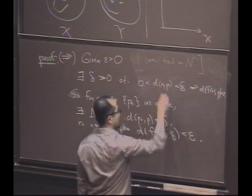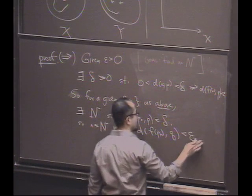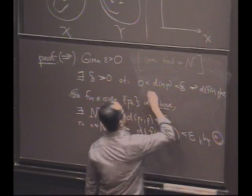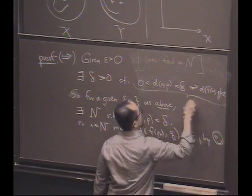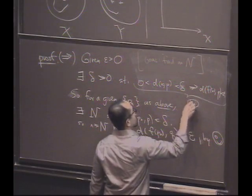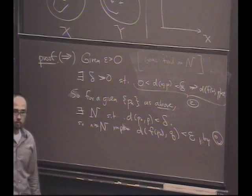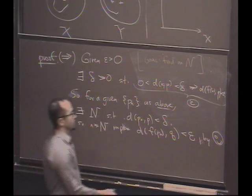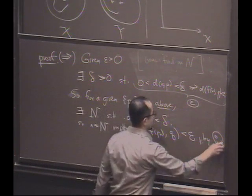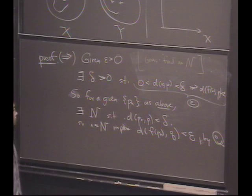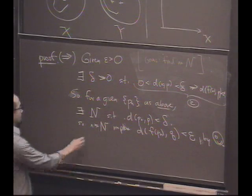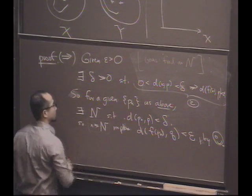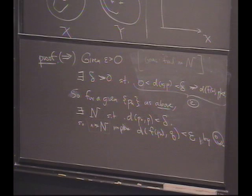This is just what I used by Cyclops Smiley, which was this condition right there. I used the condition that I assumed. And now this is the proposed N that works. So that's the forward direction.